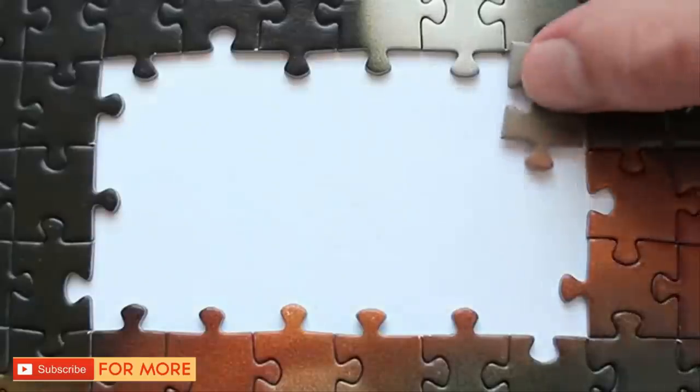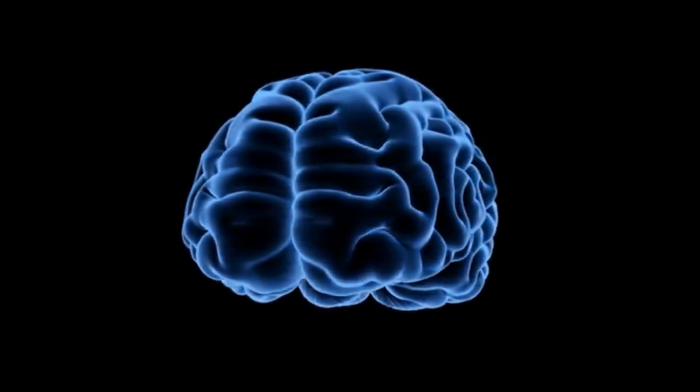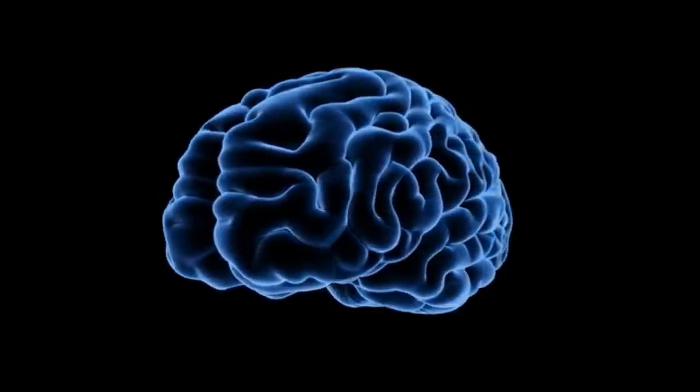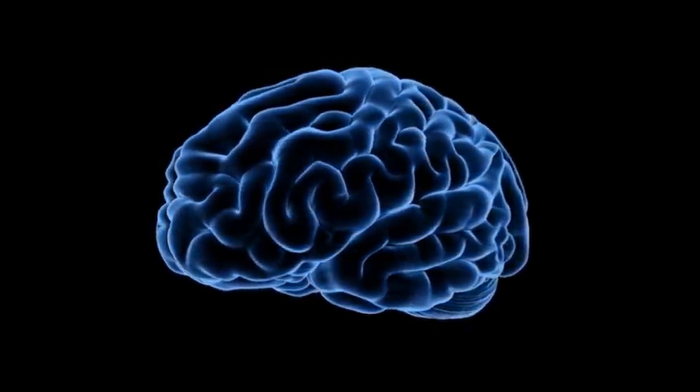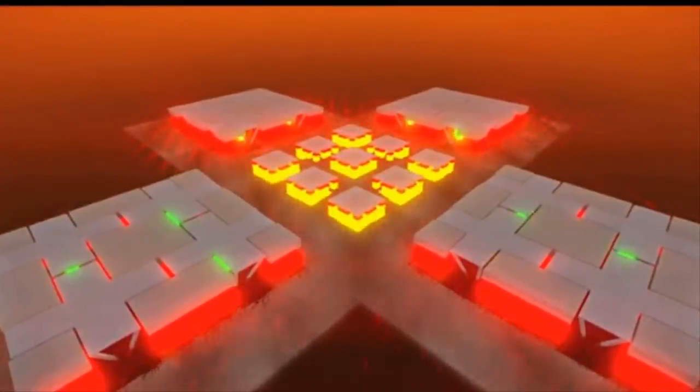While the brain is a complicated organ, it's often no match for even the simplest optical illusions. When we see one thing but are told something else is present, it can all add up to nothing but confusion.